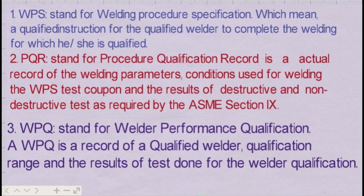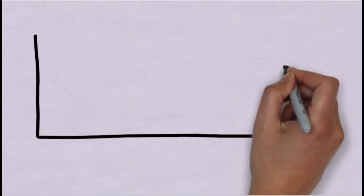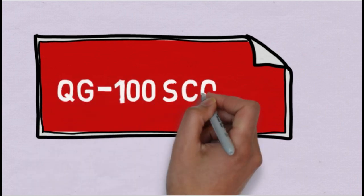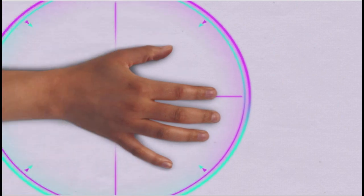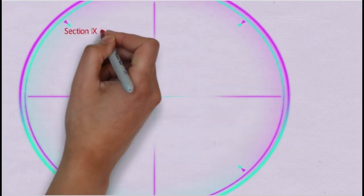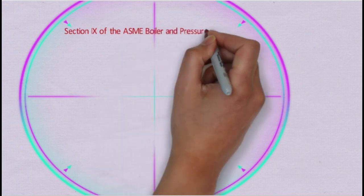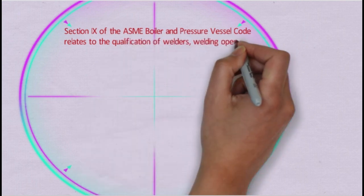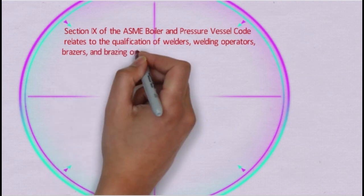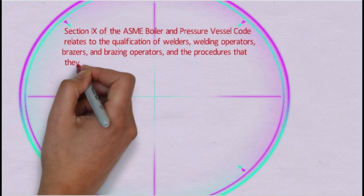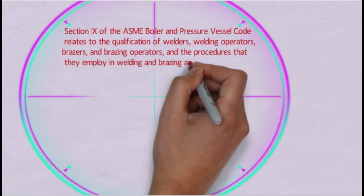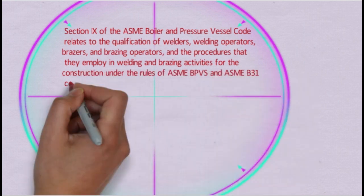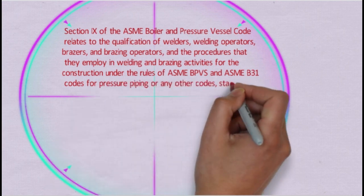Let us now move to QG100. QG100 of ASME Section 9 covers the scope of the code. Section 9 of the ASME Boiler and Pressure Vessel Code relates to the qualification of welders, welding operators, brazers and brazing operators, and the procedures that they employ in welding and brazing activities for the construction under the rules of ASME BPVC and ASME B31 codes for pressure piping, or any other code, standard or specification that references this standard.